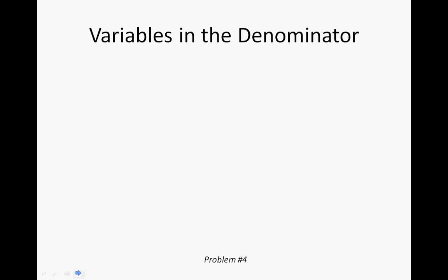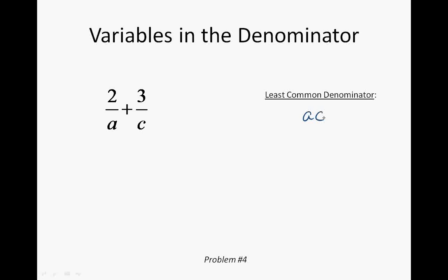Those previous problems had real number denominators. Now these problems have a variable in the denominator. When the denominators are two completely different variables, the easiest least common denominator is just the product of those two denominators. If the variables share similar factors, we'll address those later — but for completely different variables, just multiply them together to get your least common denominator.